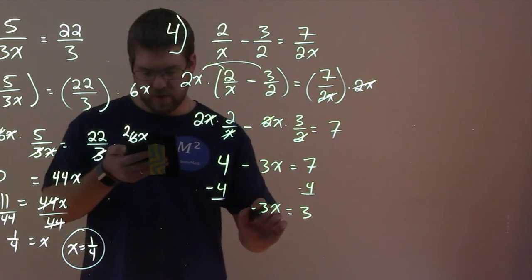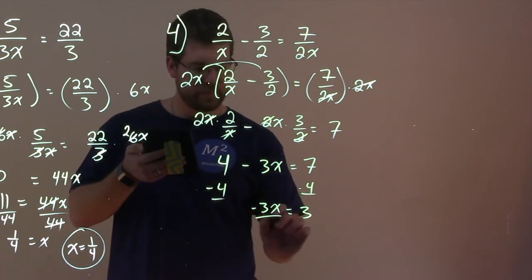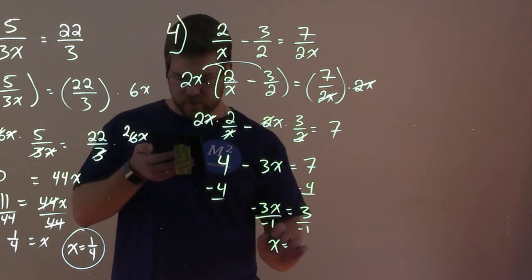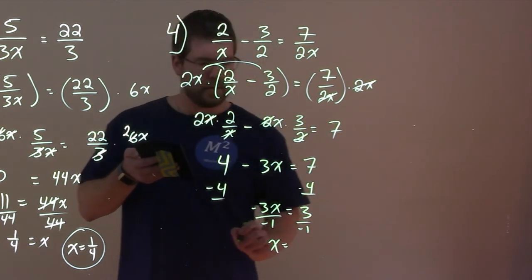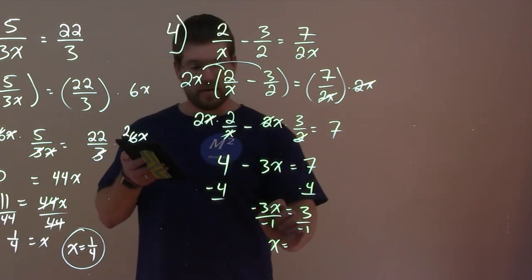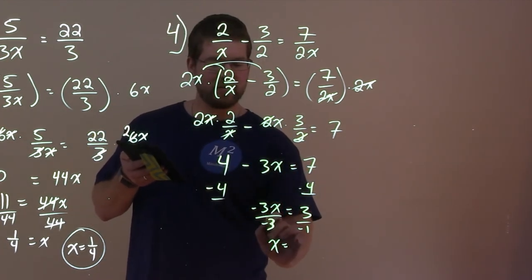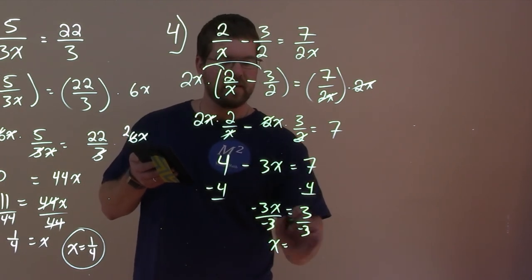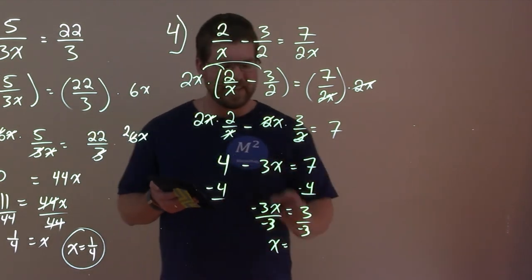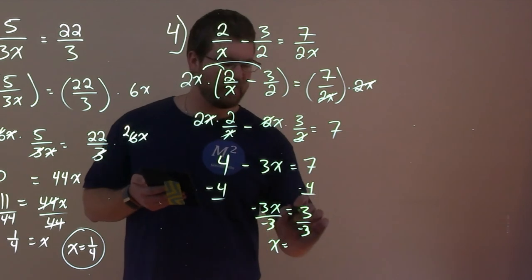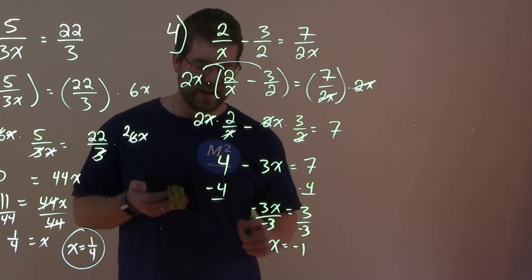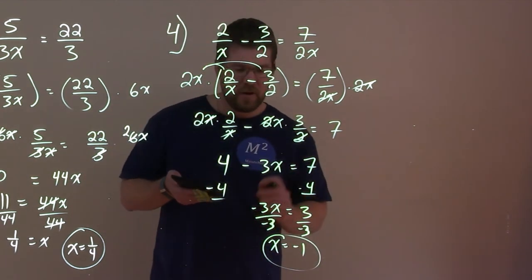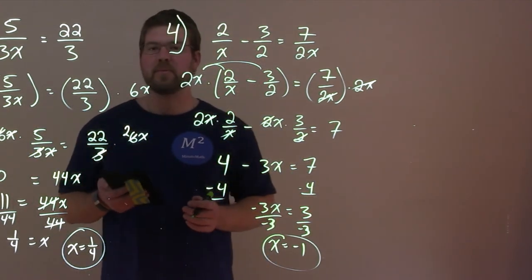We divide both sides by negative 3 — excuse me, I almost made a mistake there — dividing by negative 3 on both sides leaves us with negative 1 as our answer. 3 divided by negative 3 is negative 1, so x equals negative 1.